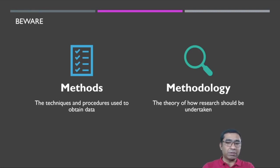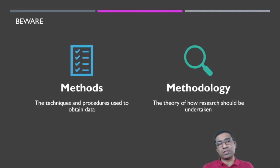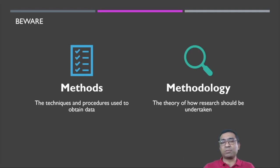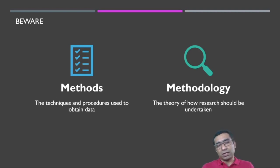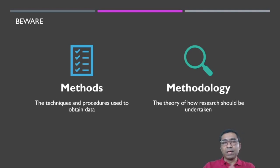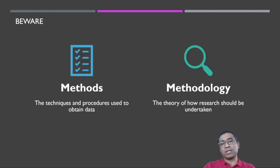Research methodology and research methods are entirely two different things. This subject deals with research methodology, which starts with posing a research question or choosing a good research idea. Methods is basically just a subset or small part of your methodology where we deal with data collection and data analysis procedures. So methods and methodology are entirely different — do not mix these two terms. This subject covers the research process from A to Z, while method or research design deals with data collection and analysis procedures.